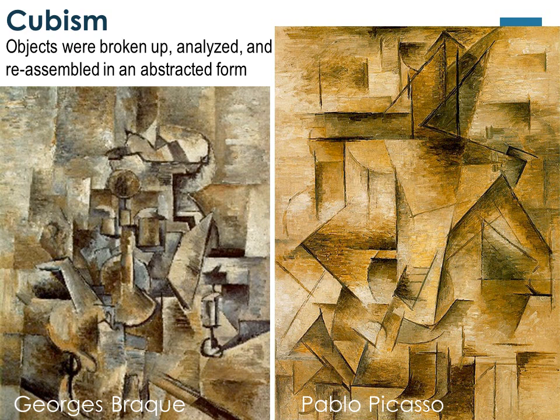The next is Cubism. Objects were broken up, analyzed, and reassembled in an abstract form. Some of the most well-known Cubists were Braque and Picasso.